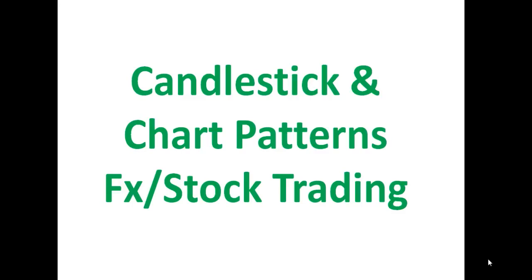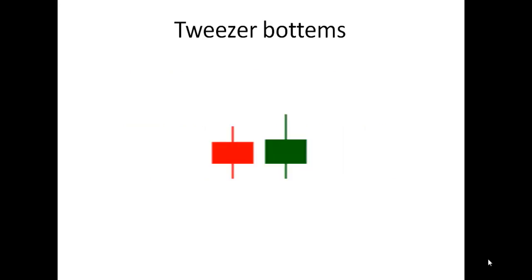In this video we'll talk about the tweezers bottoms candlestick pattern. The ideal tweezers bottom should not have any upper wick in either of the candles — only the lower wick — and the lower wick should not be way too long; it should be equal or near equal to the body size. It's very rare that you'll find the exact kind of setup in a live trading chart.